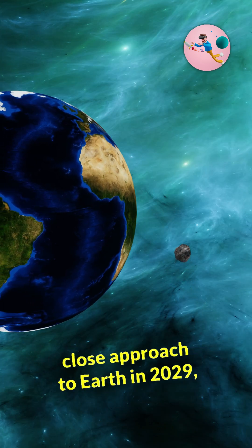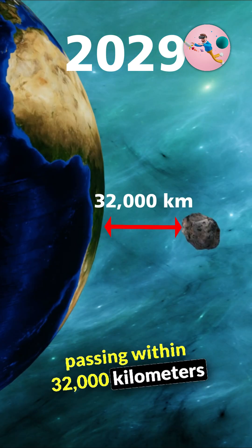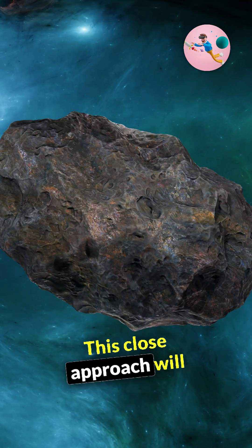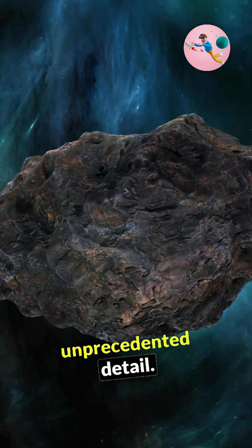However, Apophis will still make a close approach to Earth in 2029, passing within 32,000 kilometers of our planet. This close approach will provide an opportunity for scientists to study Apophis in unprecedented detail.